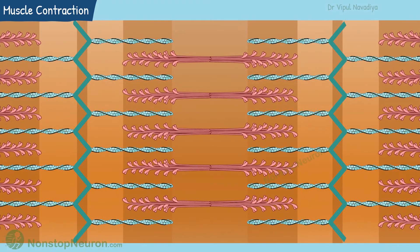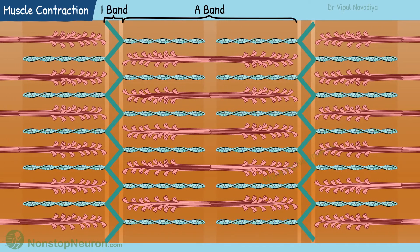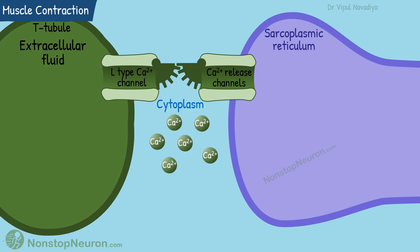A few points regarding the length of different bands: the A band is the region of thick filaments, and the I band is the region of thin filaments without overlapping thick filaments. As the thin filaments are pulled further and further towards the center, the I band shortens. The A band, on the other hand, maintains the same length.